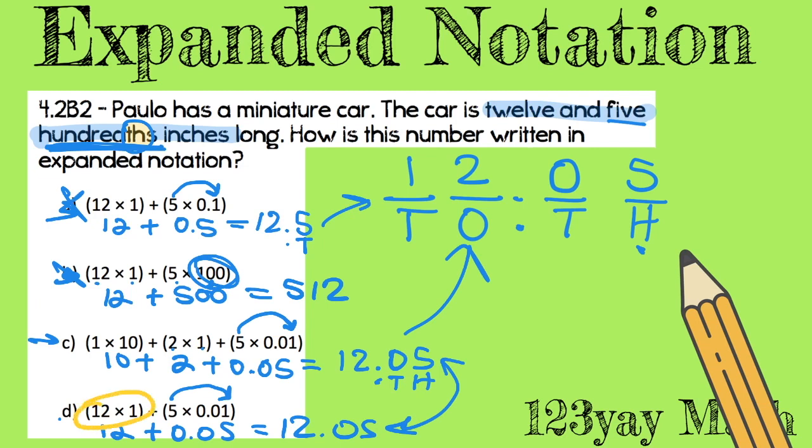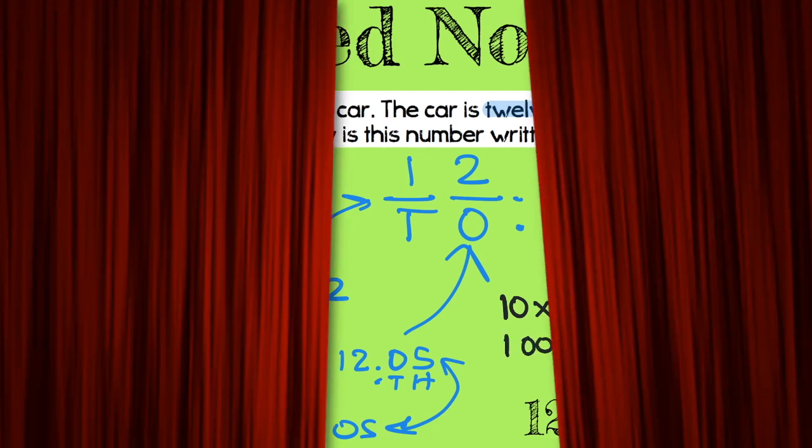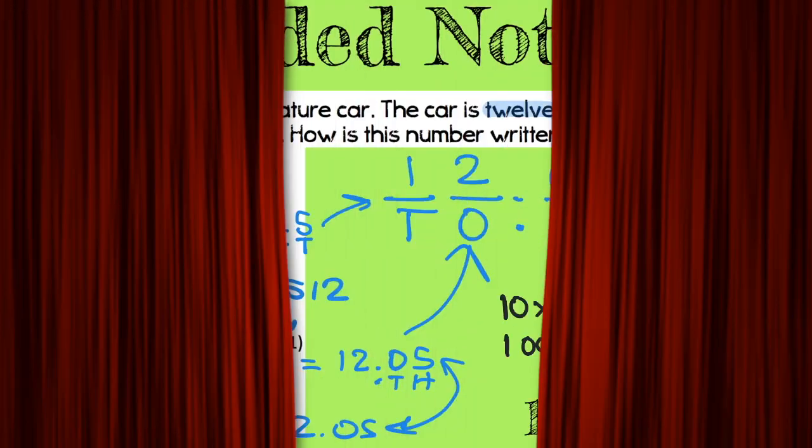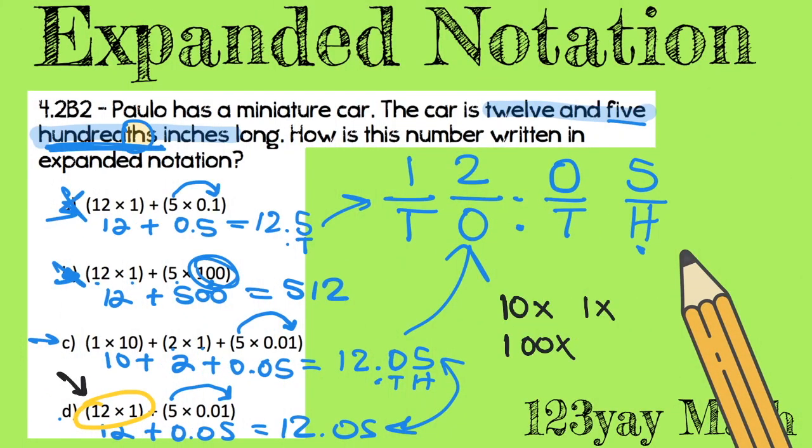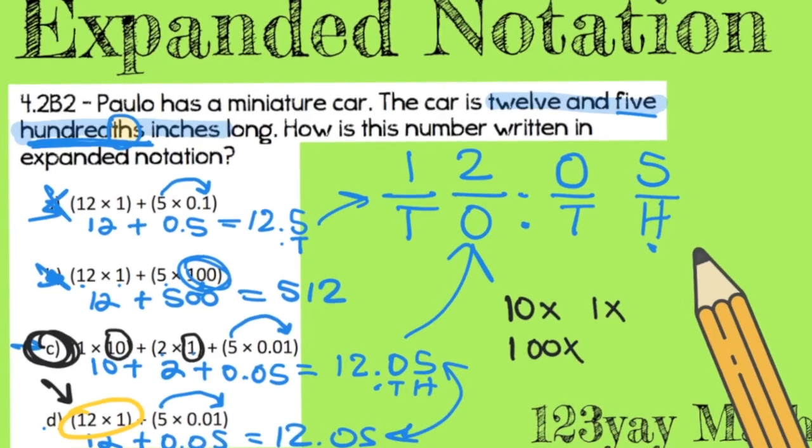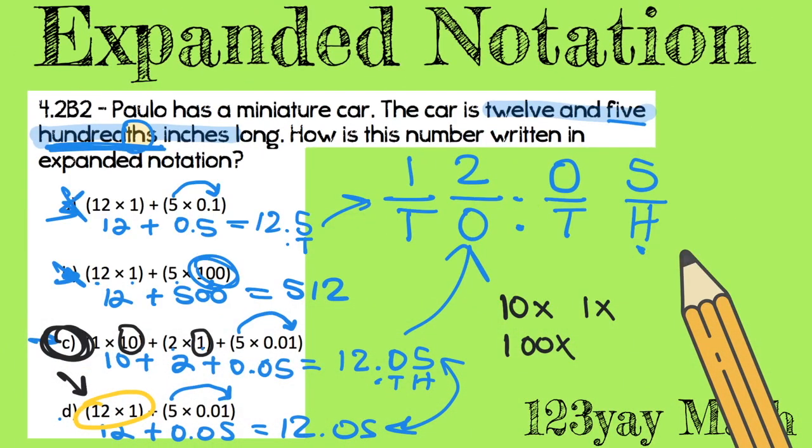You can see, boys and girls, the difference between these is that (12×1) is not in expanded form, because when you're using expanded form you are breaking the number into the base. So it can be (10×something), (1×something), (100×something), and so on. And this 12 is not broken - it should be 10 plus 2. And so now I know with all my heart that C is the correct answer.